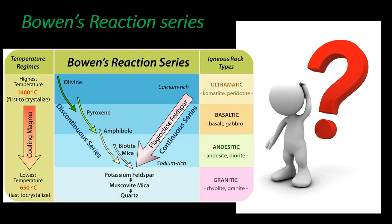Bowen's Reaction Series is basically a crystallization process of basaltic or silica-rich melt with decreasing temperature. This is the basic diagram of Bowen's Reaction Series, which shows the discontinuous and continuous reaction series. It was discovered by N.L. Bowen, who identified two reaction series.